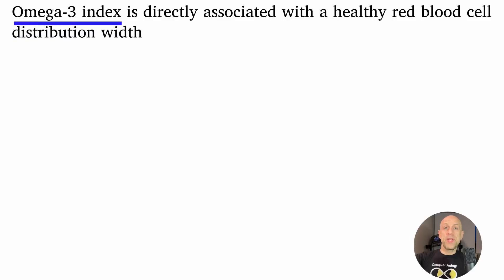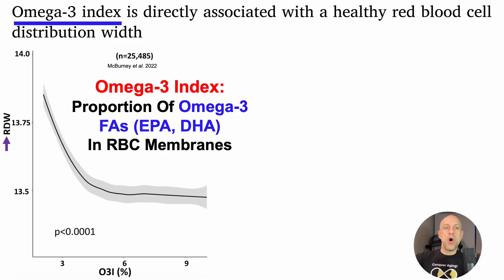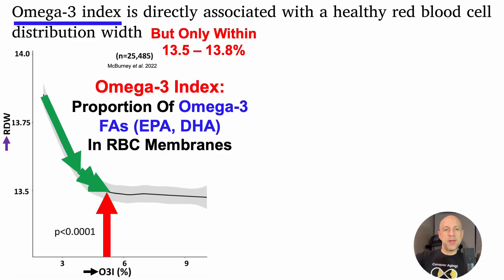In at least one study, the omega-3 index was associated with a relatively lower RDW. The omega-3 index is the proportion of omega-3 fatty acids — including the sum of EPA and DHA — found in red blood cell membranes. The data shows RDW percent on the y-axis plotted against the omega-3 index on the x-axis. As the proportion of EPA and DHA in red blood cell membranes increases up to about 5%, RDW percentage declines from about 13.8 to 13.5. However, at higher omega-3 indexes up to more than 9%, RDW percent was still around 13.5 — still too high given the optimal range of 11.4 to 12.6.